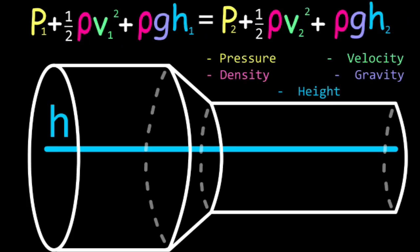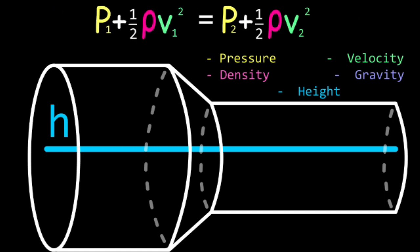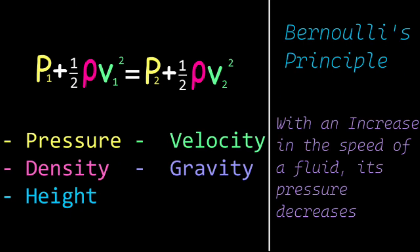In this case, height, density, and force of gravity are all constant, thus proving Bernoulli's principle that as the velocity of a fluid increases, its pressure decreases.